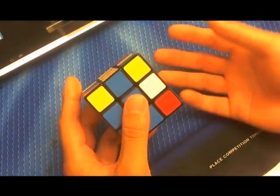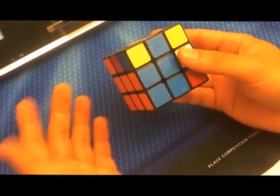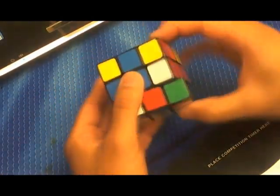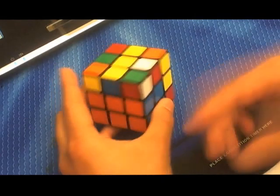And so, you have a very short algorithm. It's actually like five moves or something. And it works like this. And it permutes all the corners.